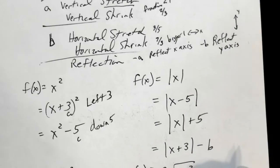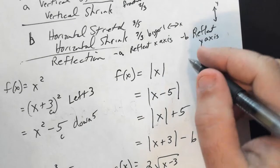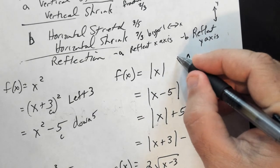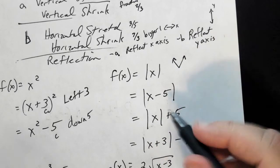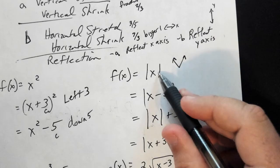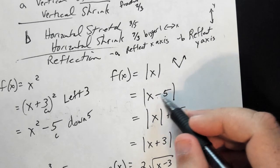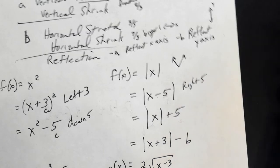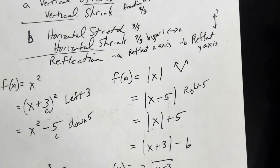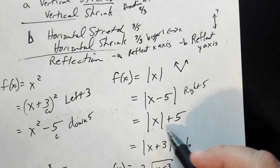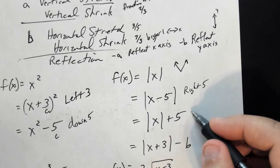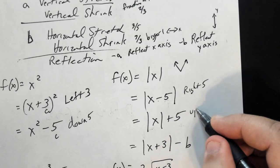For the absolute value function, which gives a V-shape: if you have a minus 5 inside, that's a right shift of 5, and you'll see that on your calculator. If it's outside and positive, it's an up 5.